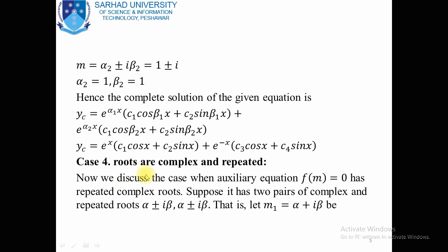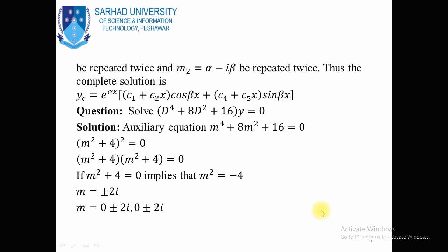Now the new case: roots are complex and repeated. We discuss the case when the auxiliary equation has repeated complex roots. Suppose it has two pairs of complex and repeated roots alpha ± iota·beta appearing twice. Since these two complex roots are equal, the complementary solution is e^(alpha·x)[(c1 + c2·x)cos(beta·x) + (c4 + c5·x)sin(beta·x)].